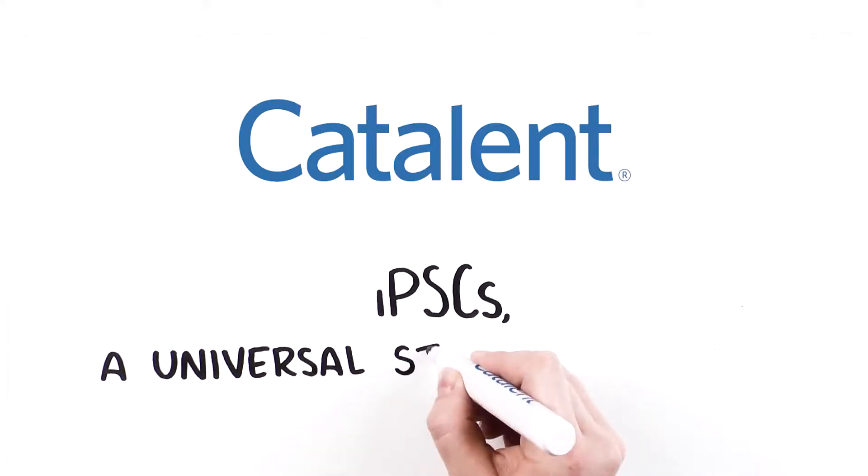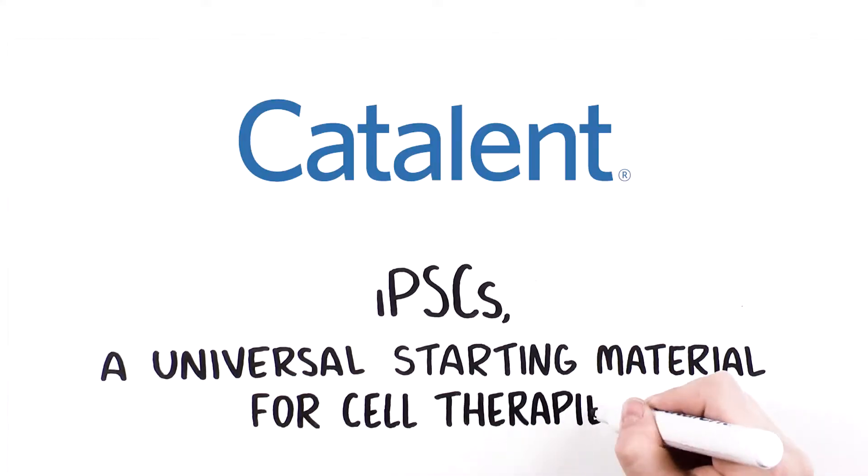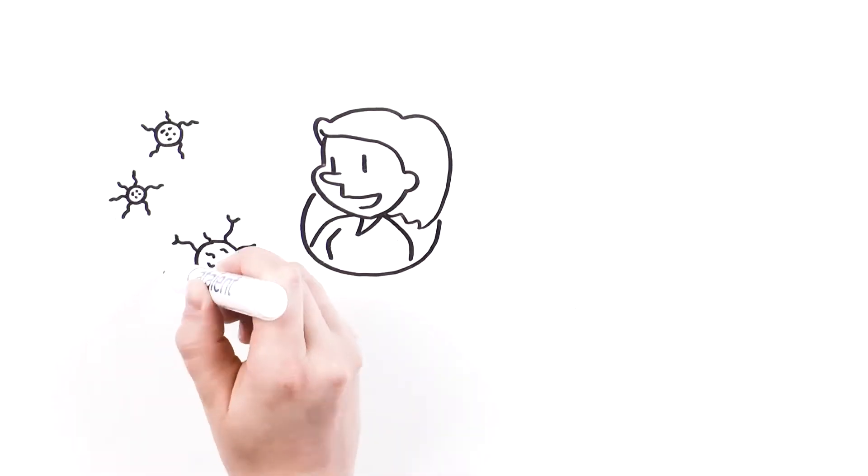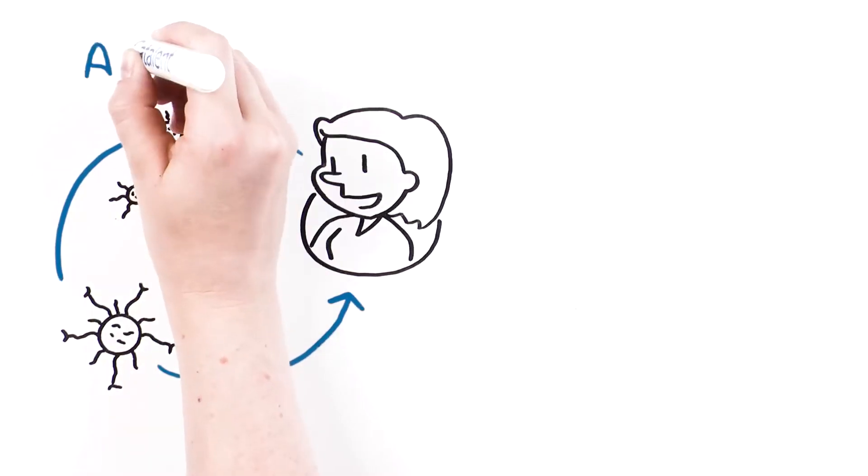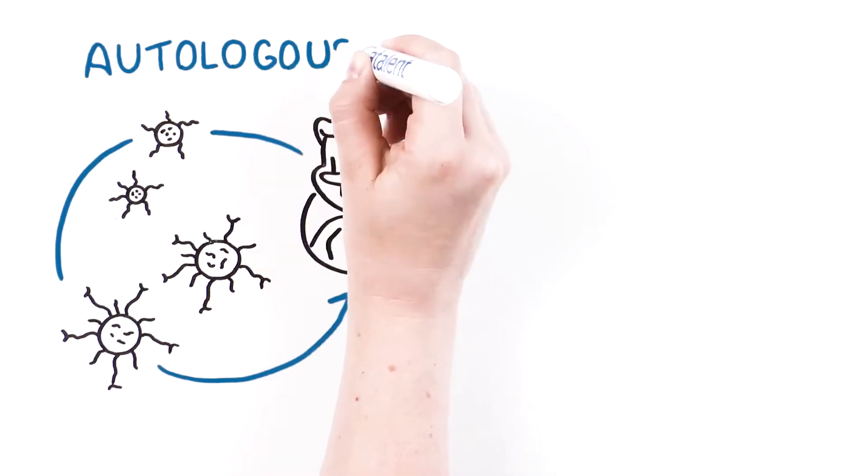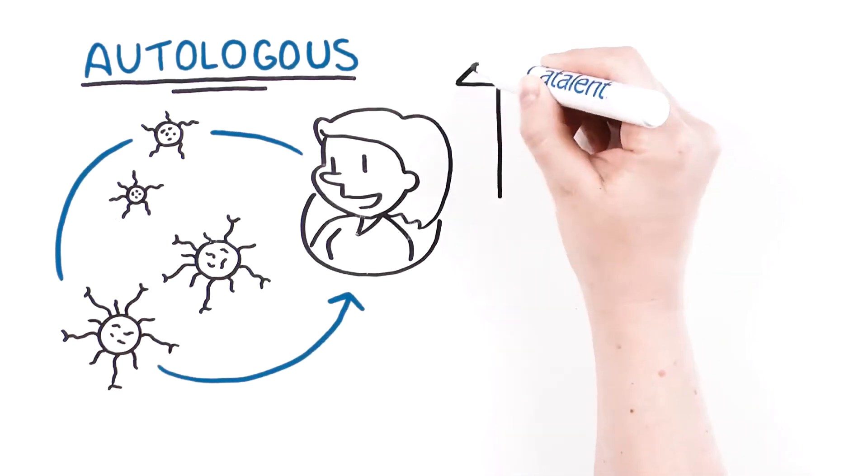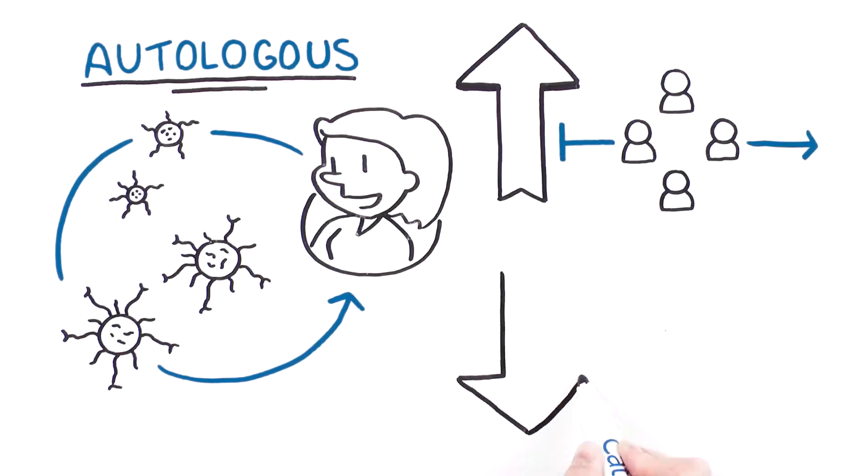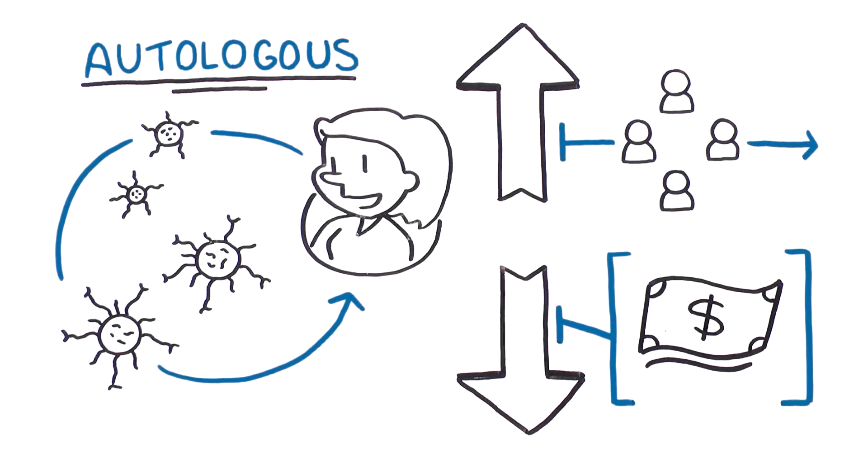IPSCs: a universal starting material for cell therapies. The cell therapy industry has achieved clinical success with the approval of several autologous-based therapies. To increase accessibility, reach a broader patient population, and potentially reduce costs of cellular therapies, a more universal source of starting cellular material is needed.